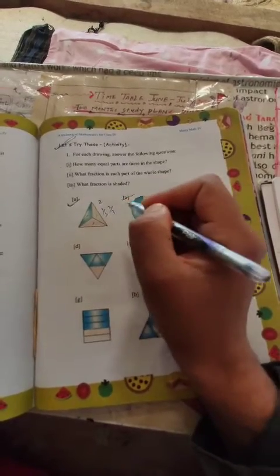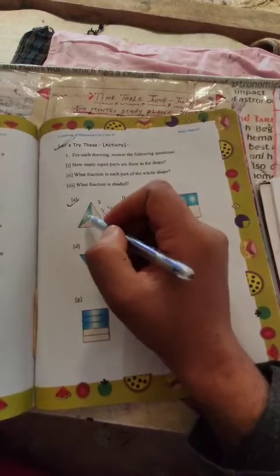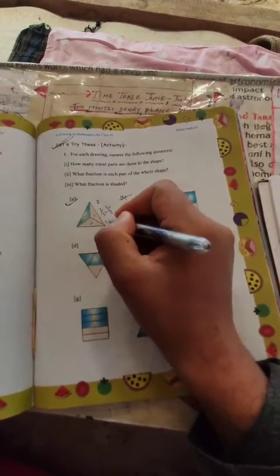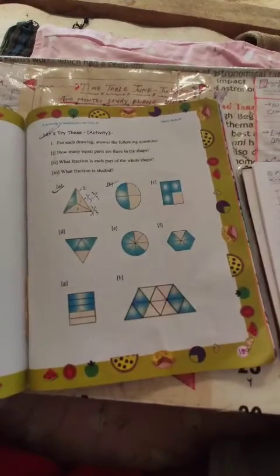The shaded part is two by three, 2/3. What fraction is shaded? The shaded part is 1/3.